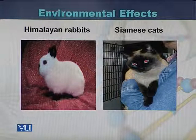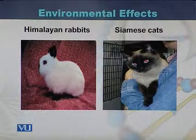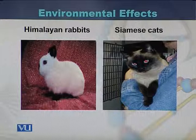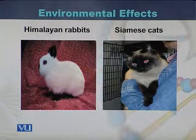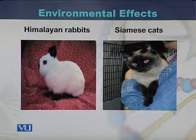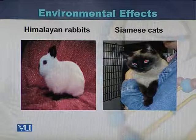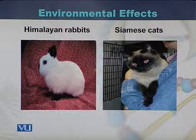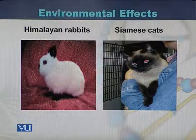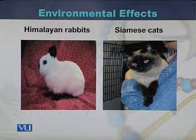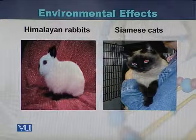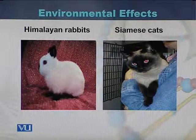The second example is of Himalayan rabbits and Siamese cats. Both of these animals are impacted by the environment in which they are growing. Due to environmental effects, their fur can change to brown or black, and if the environment is suitable, their fur returns to its original white color.